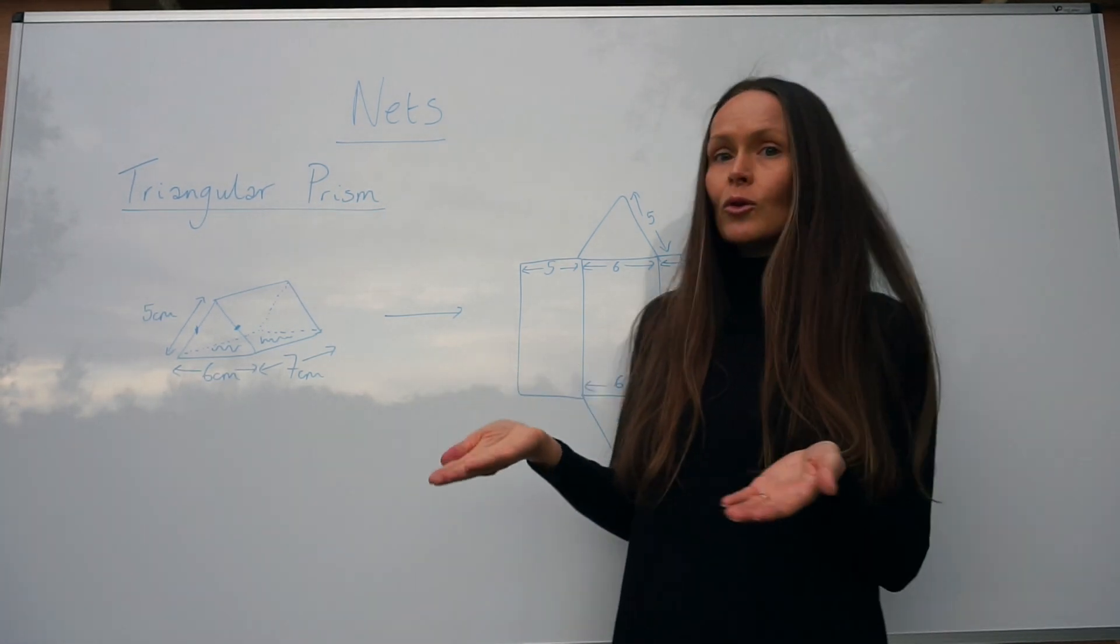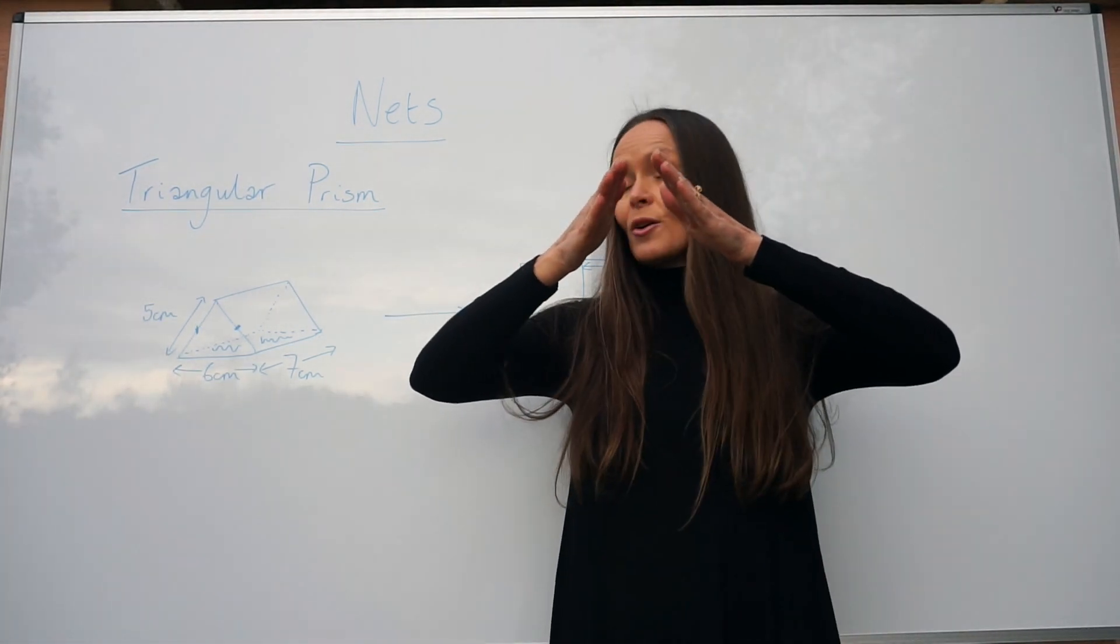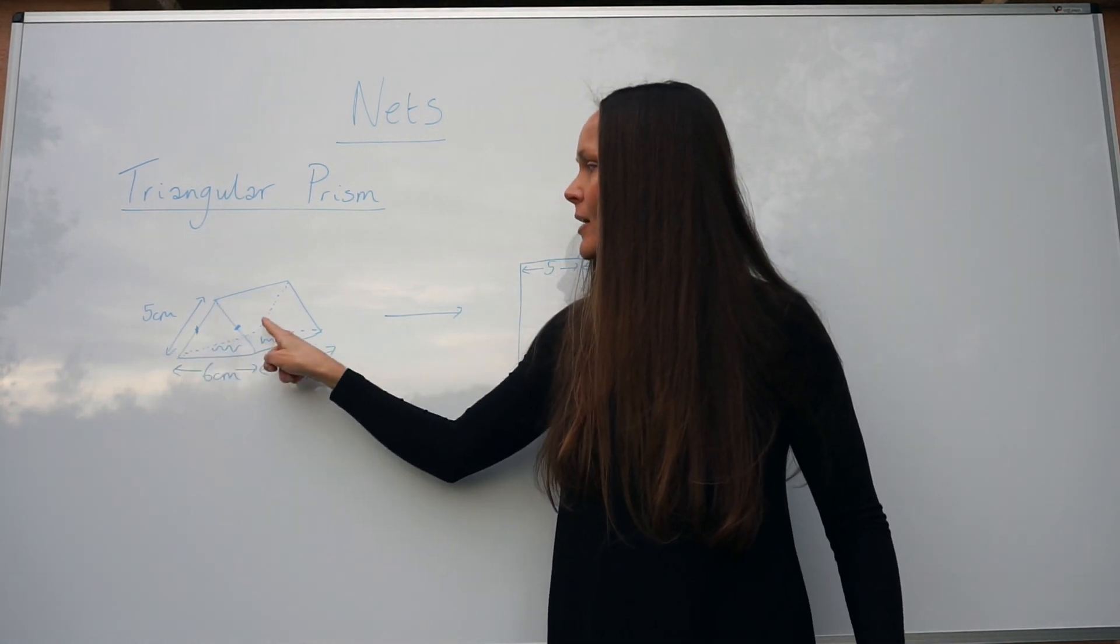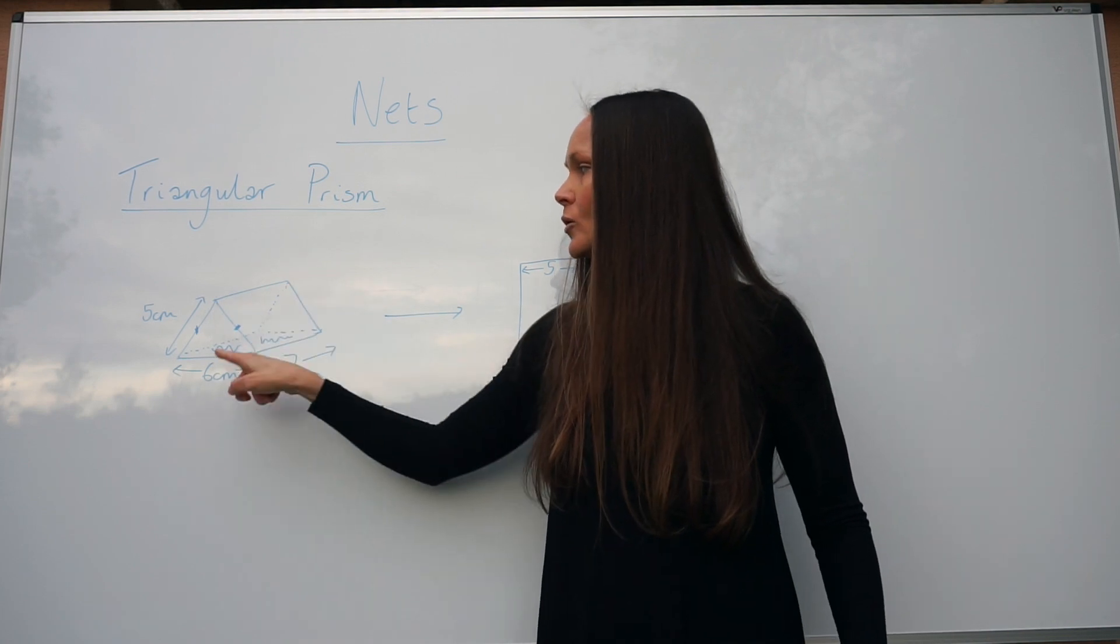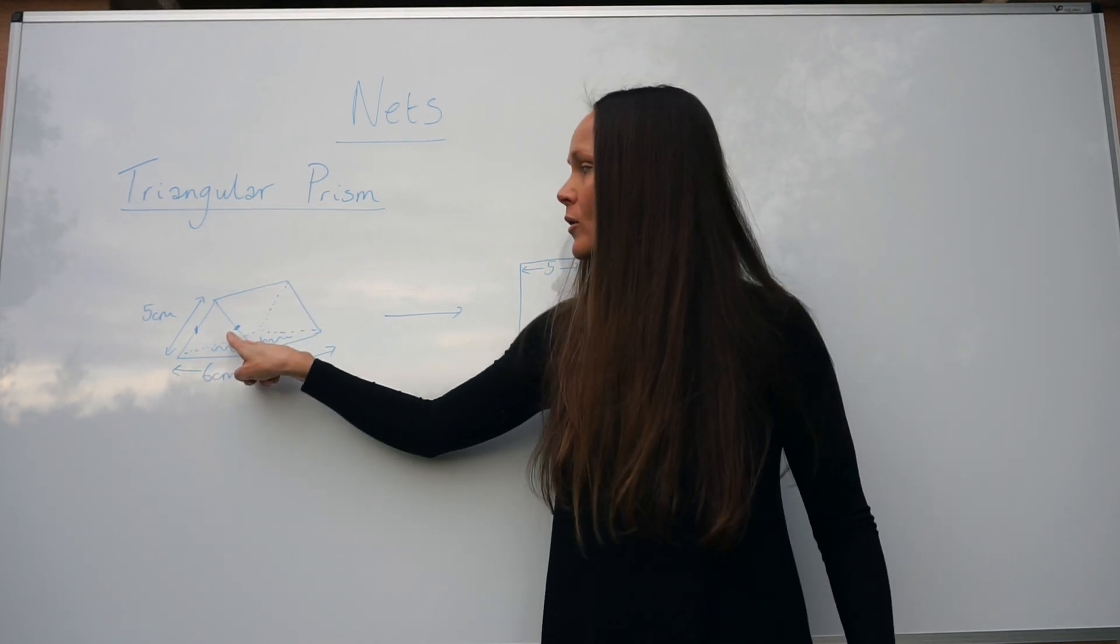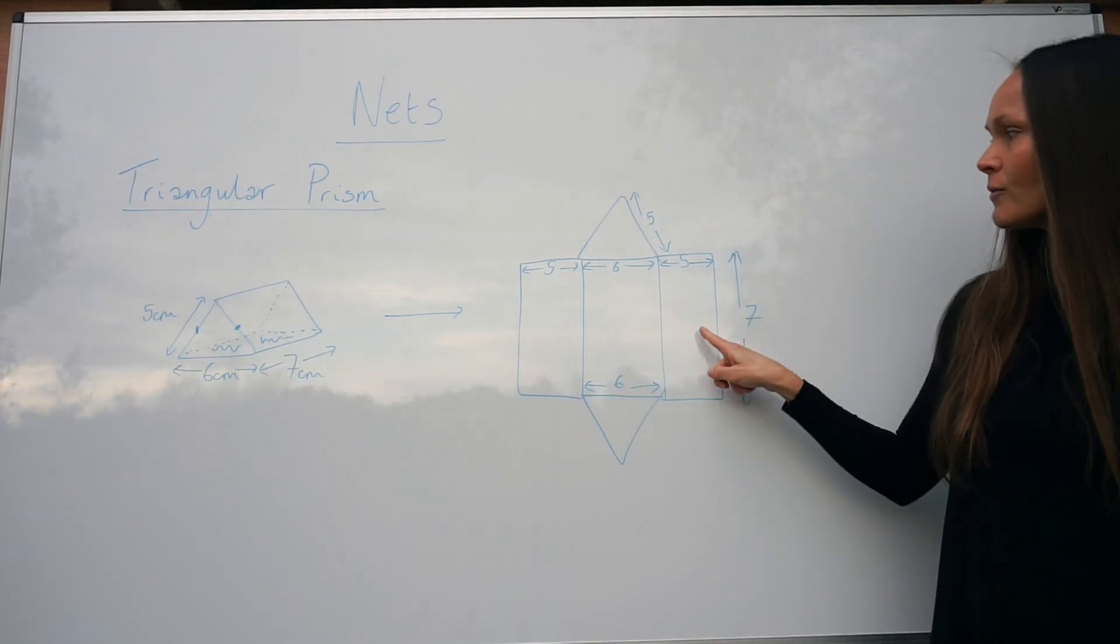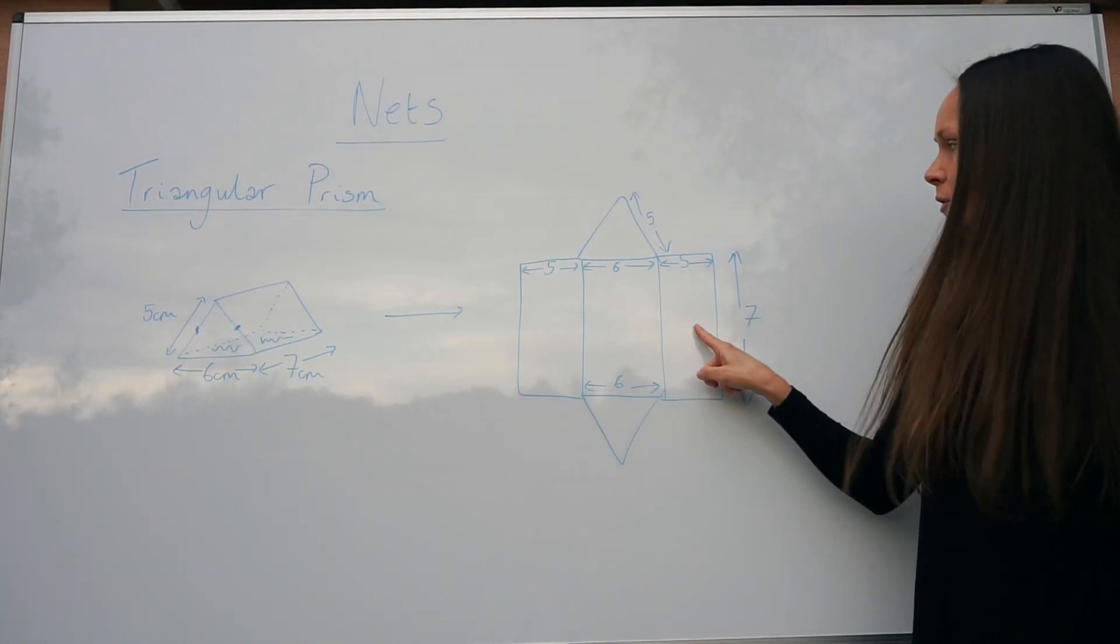Then you can either add on the rectangles or the triangles; it doesn't really matter which order you draw them. So let's draw the rectangular faces that fold up like this next. This one is five by seven and so is this one. They're identical. We can see it's an isosceles triangle. If this is five, so is this length. So here are the two rectangles, five by seven.